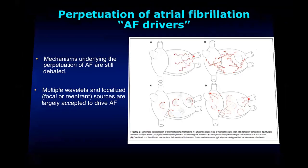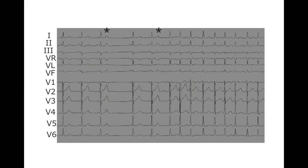Regarding the ECG of atrial fibrillation: it is characterized by a rapid, irregular ventricular rate with fibrillatory atrial waves or fibrillatory P waves on the ECG. If we can capture the beginning of paroxysmal AF, we can sometimes see it initiated by a premature atrial beat. As shown here, at the end of a sinus rhythm strip, a premature atrial beat is blocked at the atrium and ventricle. It occurs again and this time initiates atrial fibrillation, proving that paroxysmal AF is triggered by premature beats.